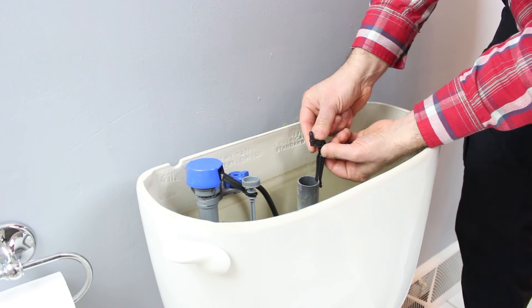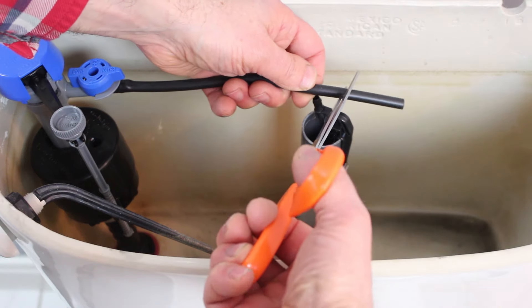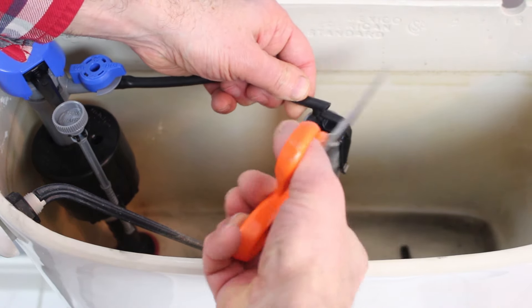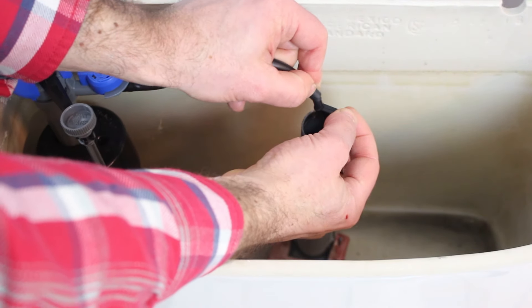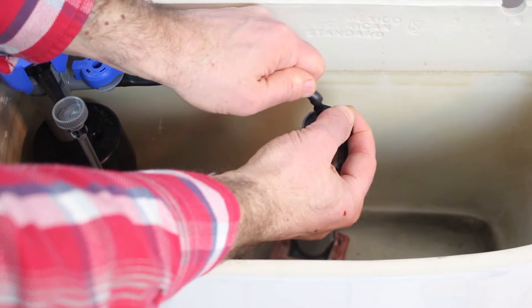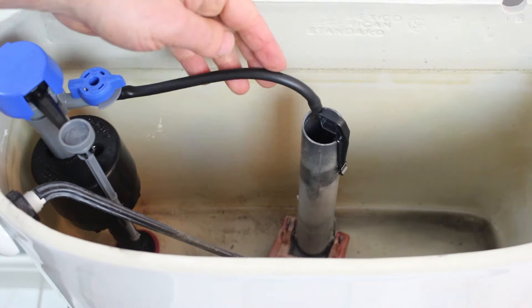Now this little clamp goes on top of the flush valve, and we're going to cut our rubber hose to the right size so that it won't be interfering with the bottom of the tank top. We're just putting that hose over into the slot of that little clamp and dry fitting it.